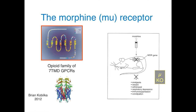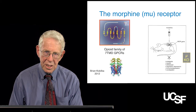Very recently, Brian Kabilket at Stanford was able to crystallize the mu opioid receptor. So we know not only its structure but its conformation. So how does this have to do with the placebo effect?